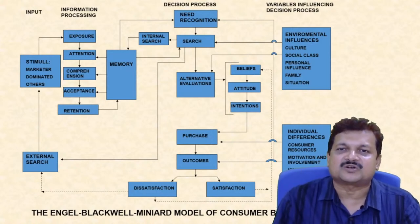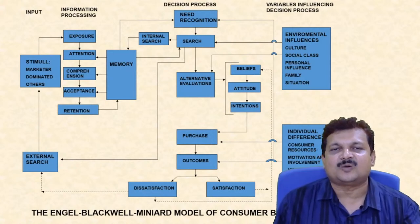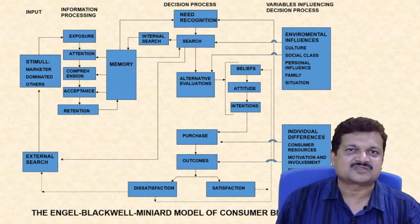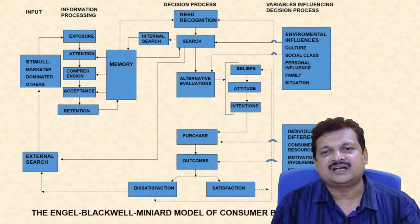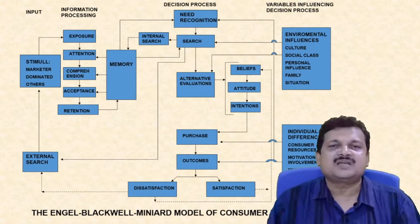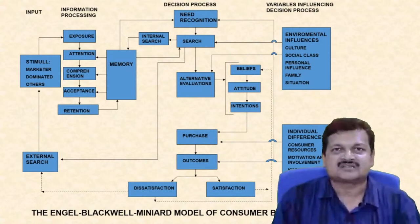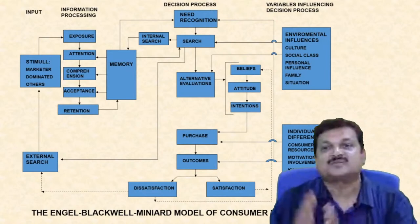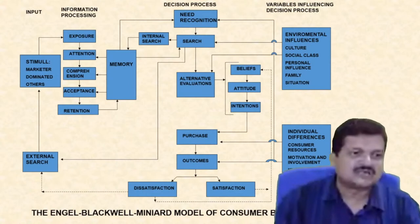Unlike the Howard-Sheth model, the EBM model captures both satisfaction and dissatisfaction as outcomes. If dissatisfied, the consumer goes to external search and becomes a brand switcher. If satisfied, the consumer returns to need recognition with the same brand — becoming a brand loyal customer who repeats the purchase. External variables may still intervene and cause brand switching even for satisfied customers.